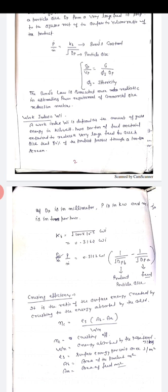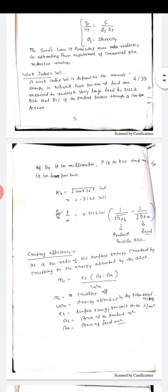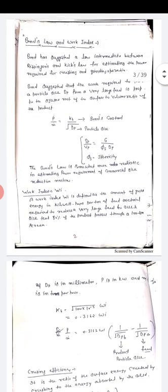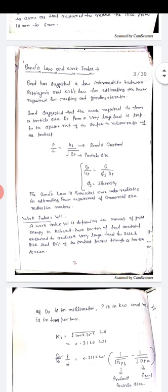Work index is defined as the amount of gross energy in kilowatt per hour of feed on material required to reduce a very large feed to size feed. 80% of the product passes through a 100 micrometer screen. So from here we calculate the value of KB which will be 0.3162 into work index. We put this value in the above formula. Then we obtain P upon M dot equals to 0.3162, work index 1 upon under root DPB minus DPA. I have told you earlier A is for feed and B is for product.